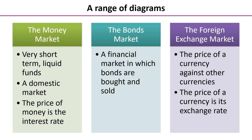There's a range of diagrams you can use. The money market is very short term, liquid funds — the domestic market — and the price of money is the interest rate. When we say very short term, we mean weeks, days, or hours, where people borrow money for a very short period of time. The bonds market is a little bit longer; bonds are often issued with frames of two years, five years, or ten years. And then the foreign exchange market is the price of a currency against other currencies, which we saw when we were looking at hot money flows.